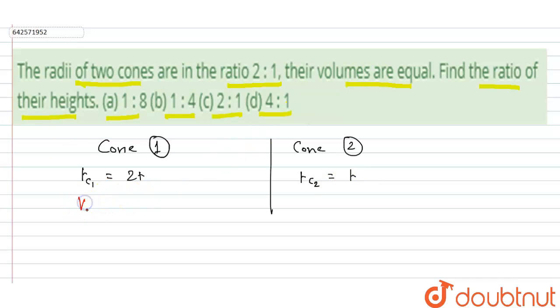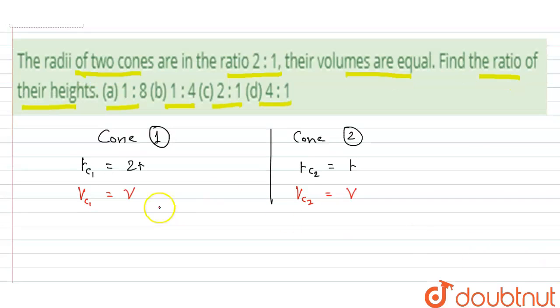The volume of cone 1 equals V, and the volume of cone 2 also equals V. We need to find the ratio of their heights. Cone 1 has height h1 and cone 2 has height h2.